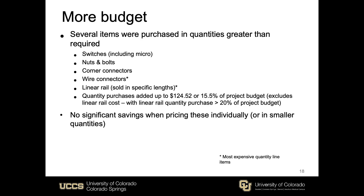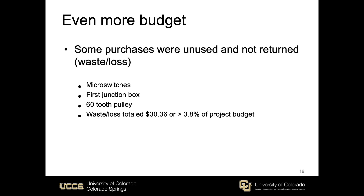Something to note, particularly if we continue to produce these machines, is that more than 20% of our budget was spent purchasing materials in quantities greater than needed for a single machine. Trying to find these materials singly or in smaller quantities did not provide any substantial savings. The wire connectors and linear rail were the most expensive bulk purchases. Also, nearly 4% of our budget was waste — items purchased and not used for BoozeStack that were held past the return window, including a set of micro switches, our first junction box which was slightly too small, and a larger pulley.